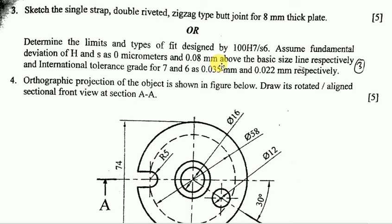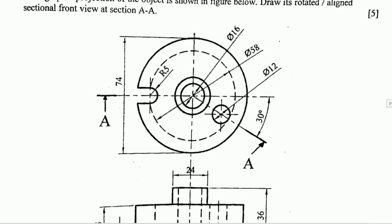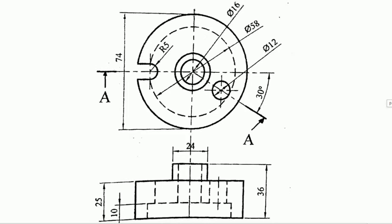Question number 4: Orthographic projection of the object is shown in the figure below. Draw its rotated aligned sectional front view at section A-A. This is from Chapter 1. Here's the figure and your Question 4.